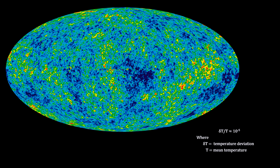For example, suppose we had a small mass density excess in this region. Light from this region would be gravitationally redshifted. These mass density deviations would be the same magnitude as the temperature deviations, one in 100,000.